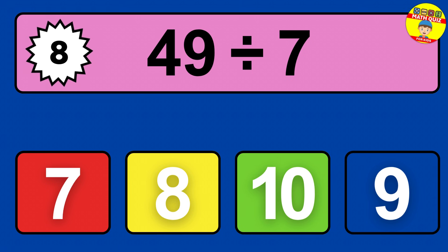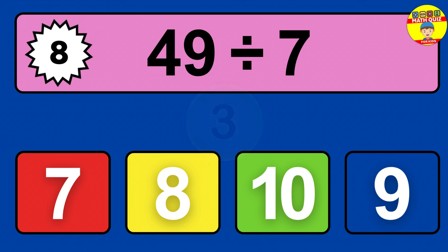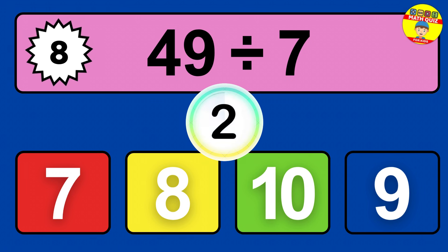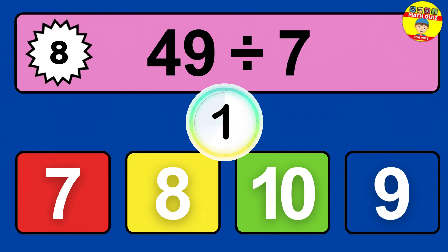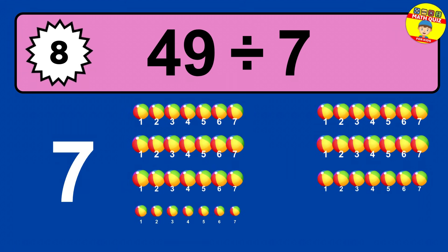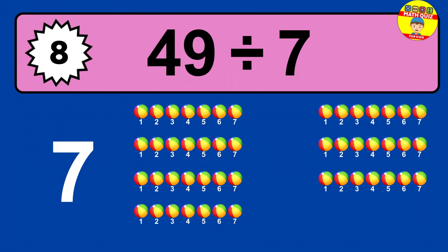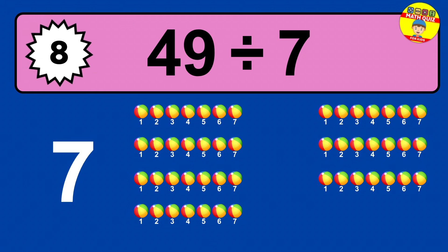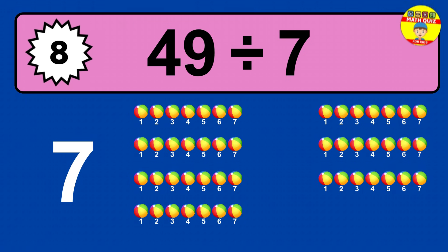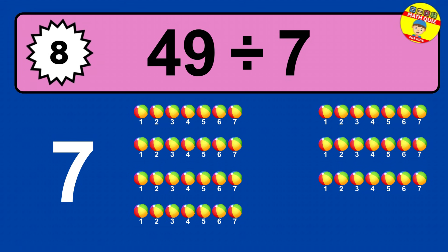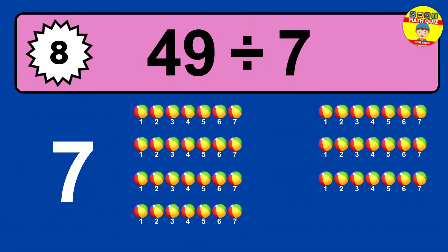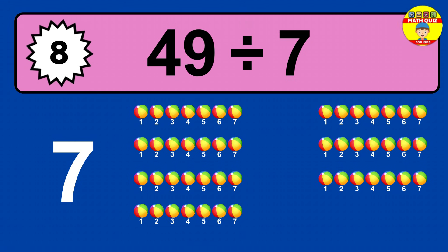49 divided by 7 — time to think. Let's go to the solution. Divide the number 49 by 7. Each group contains 7 units, so dividing 49 by 7 results in 7 equal groups. Thus, the result is 49 divided by 7 equals 7.